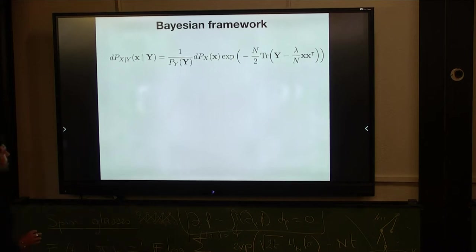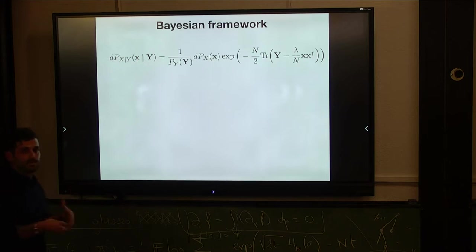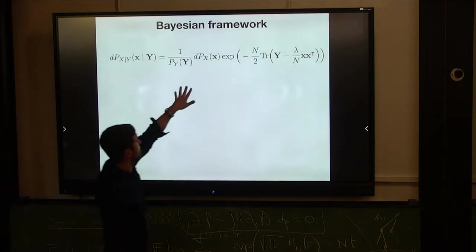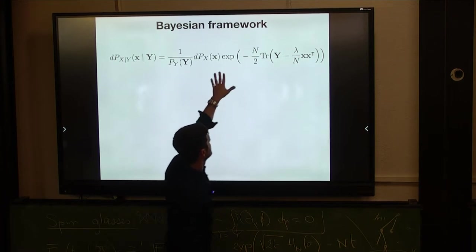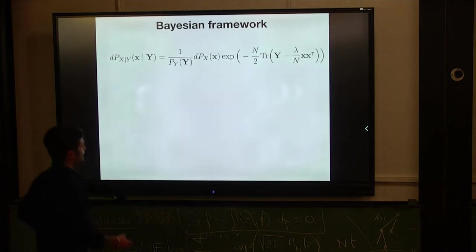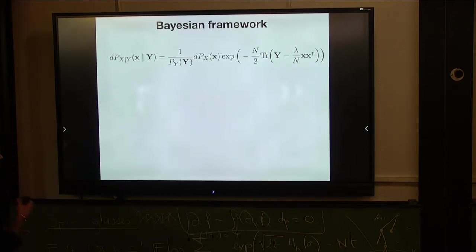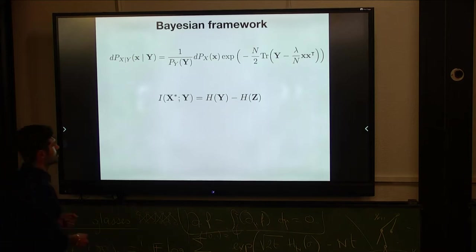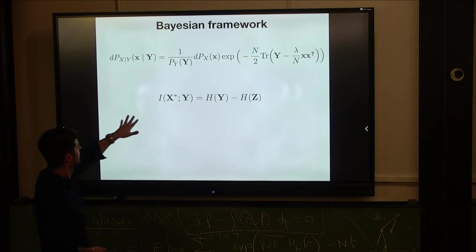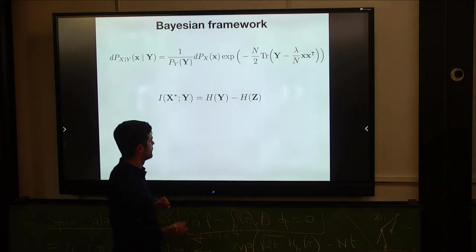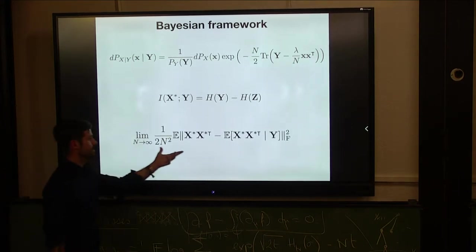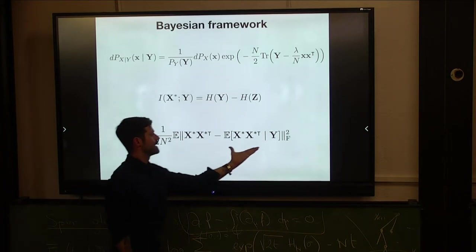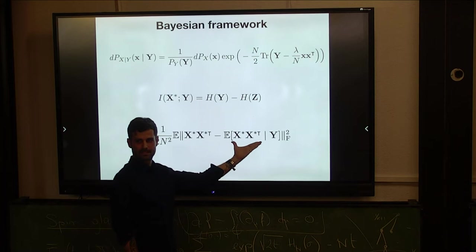I will consider the Bayesian framework. I'm writing down the Bayes optimal posterior distribution, which knows about the prior distribution on the signal that generated the ground truth signal. And here is my likelihood. The Y is the normalization. And what are the objects I want to study? Like Jean-Christophe, the mutual information between the signal and the data, and the minimum mean square error. So the square deviation in Frobenius norm between the ground truth estimator and the so-called minimum mean square estimator, which is the Gibbs mean.